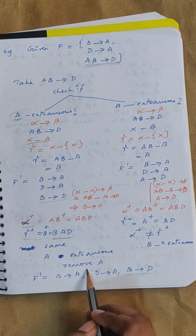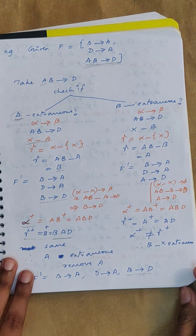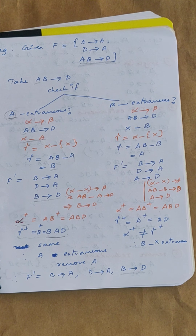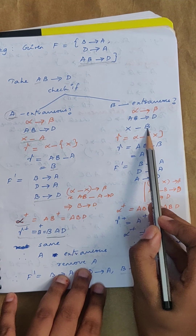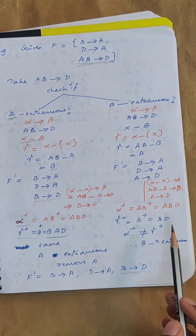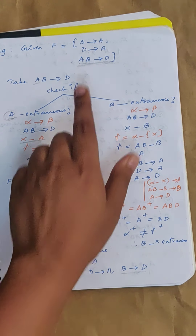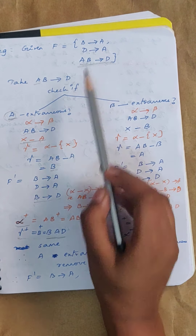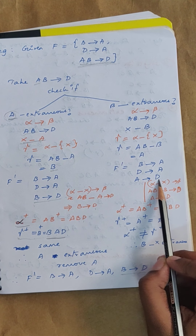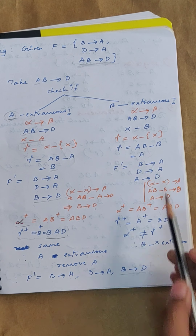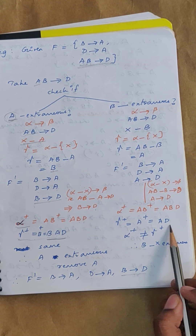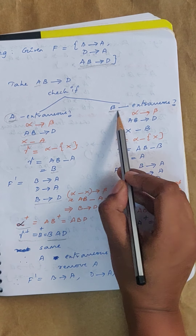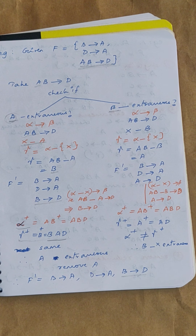Since we found A is already extraneous, B will not be extraneous. But let us verify. If B is extraneous, X is B, gamma becomes A, and F dash becomes B→A, D→A with A→D added. Find A closure in F dash: you get A and D only. Whereas alpha closure (AB closure) gives A, B, D. They are not the same, so B is an essential attribute — B is not extraneous.